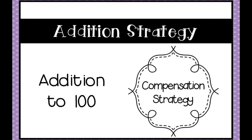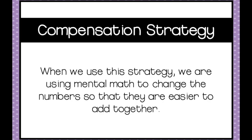Let's look at addition to 100 using the compensation strategy. When we use this strategy, we're using mental math to move the numbers around so that they're easier to add together.